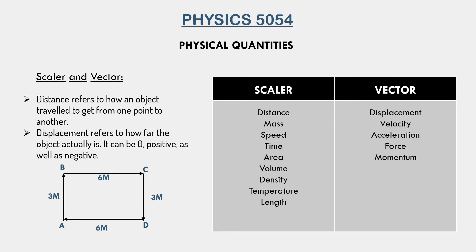In the figure, a person starts from point A. He travels 3 meters to B, then 6 meters to C, then 3 meters to D, and finally back to A. The total distance traveled is 3 plus 6 plus 3 plus 6, which is 18 meters. However, his initial position was A and his final destination is also A. So the displacement is zero, because that person did not effectively move — his final position and his initial position are the same.